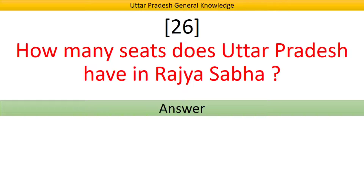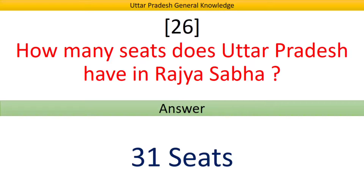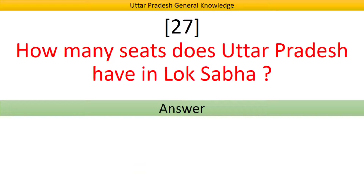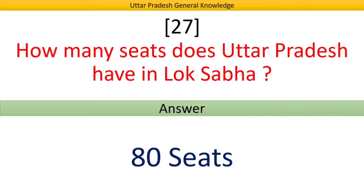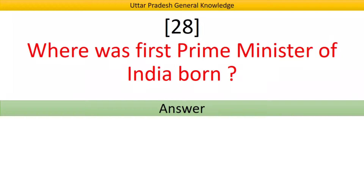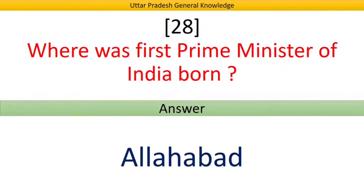How many seats does Uttar Pradesh have in Rajya Sabha? Answer: 31 seats. How many seats does Uttar Pradesh have in Lok Sabha? Answer: 80 seats. Where was the first Prime Minister of India born? Answer: Allahabad.